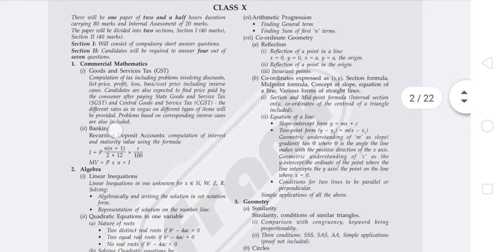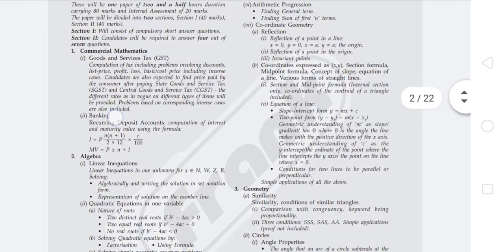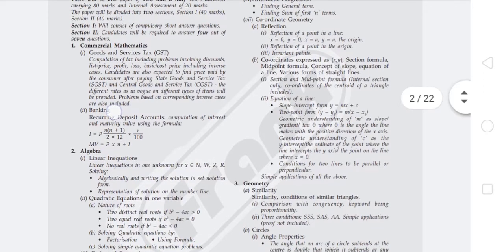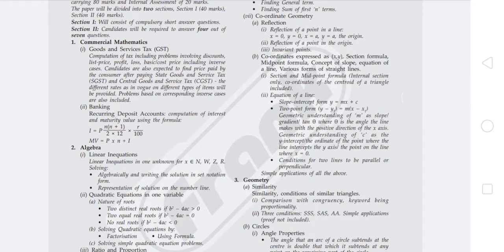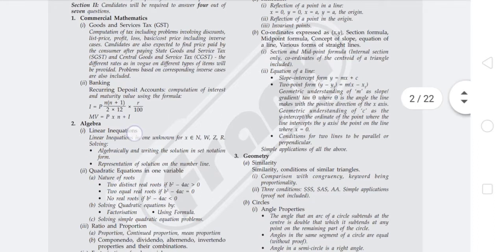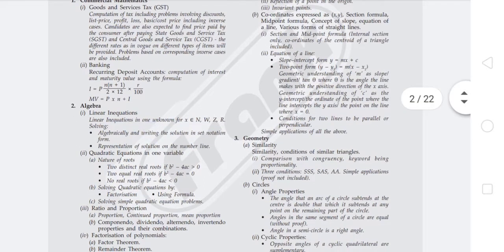Coordinate geometry also covers invariant points, section formula, midpoint formula, concept of slope, equation of a line, various forms of straight lines, section and midpoint formula for internal section only, coordinates of the centroid of a triangle, equation of a line in slope-intercept form y = mx + c, two-point form, and condition of slope m = tan θ where θ is the angle of a line. Also conditions for two lines to be parallel or perpendicular, with only simple applications.